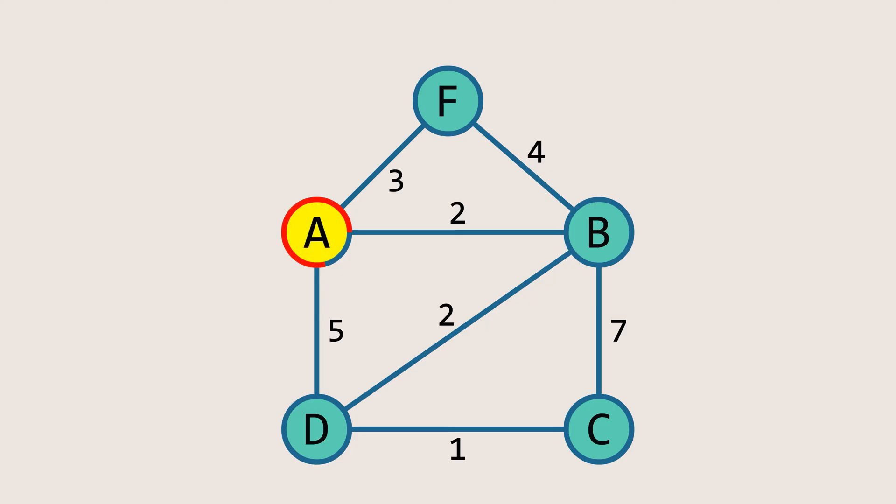Let's begin with node A. From here we examine all the edges connected to A and select the one with the smallest weight to include in our tree. We can use a priority queue to store the edges, allowing us to quickly retrieve the edge with the minimum weight. The edge AB has the minimum weight of 2, so we add this edge to our spanning tree.